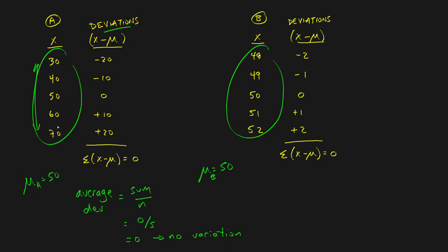But we can clearly see there is variation: Company A has values from thirty up to seventy. Not only is there some variation, there's actually more variation in Company A than in Company B. So zero just won't work. There are actually two problems: zero falsely implies no variation exists, and getting zero for both companies falsely suggests they have the same amount of variation. The root cause is that negatives cancel out positives when we sum the deviations.